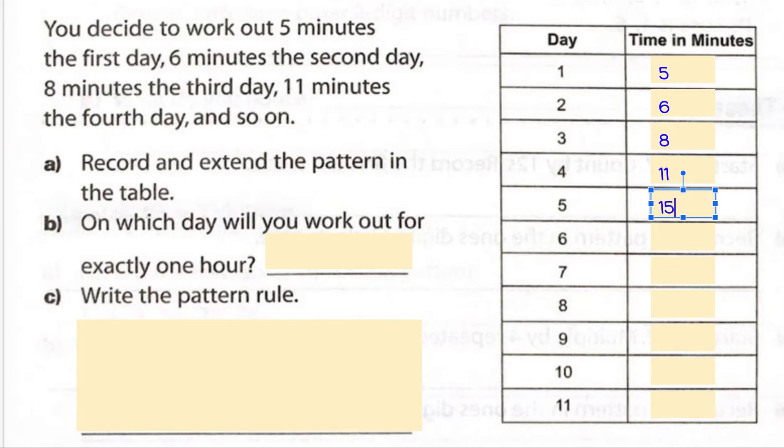So our next number is going to be fifteen. Then we're going to add five. Very good. Then we're going to add six and get, yes, twenty-six. Then we're going to add seven. And what will we get then? Thirty-three. Yes. Then we're going to add eight. Forty-one. Then we're going to add nine. Now we're at fifty. Then we're going to add ten. So now we're at sixty.